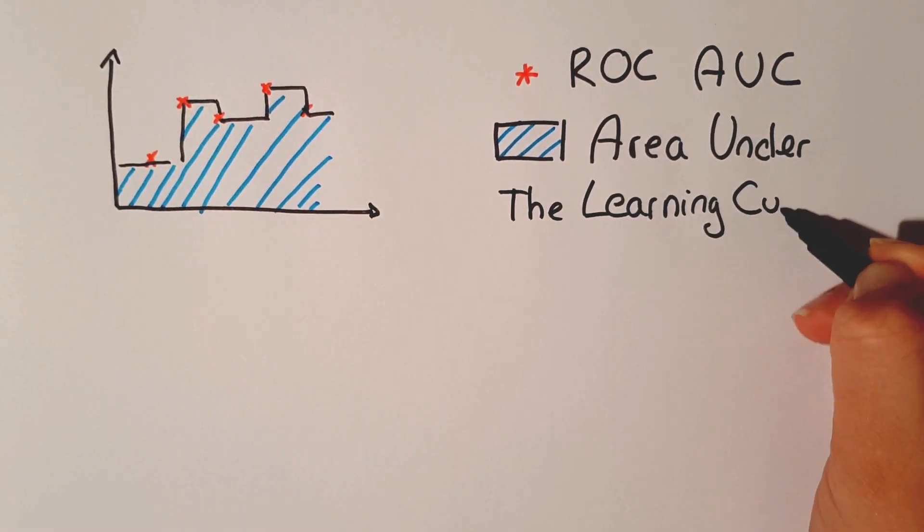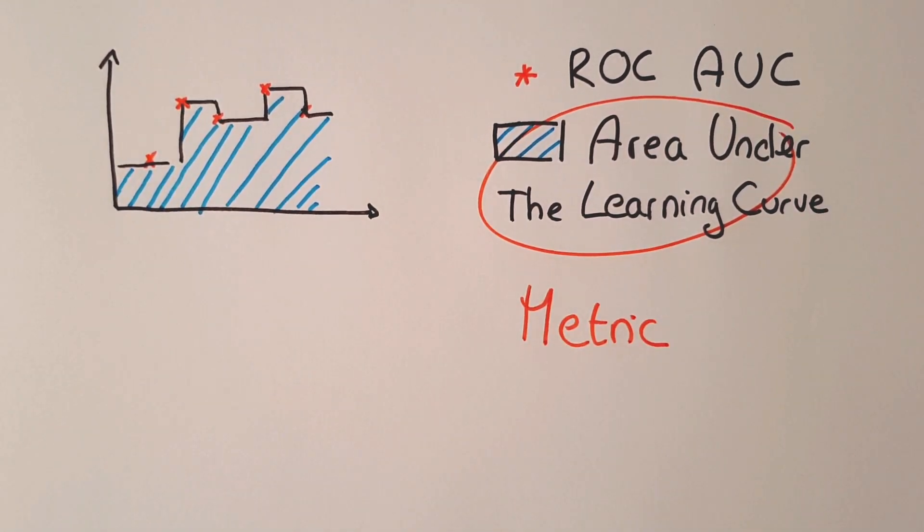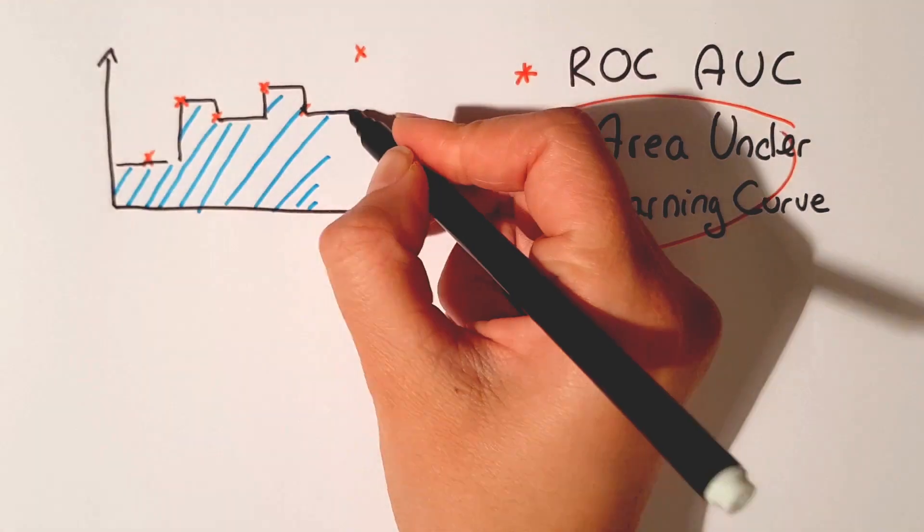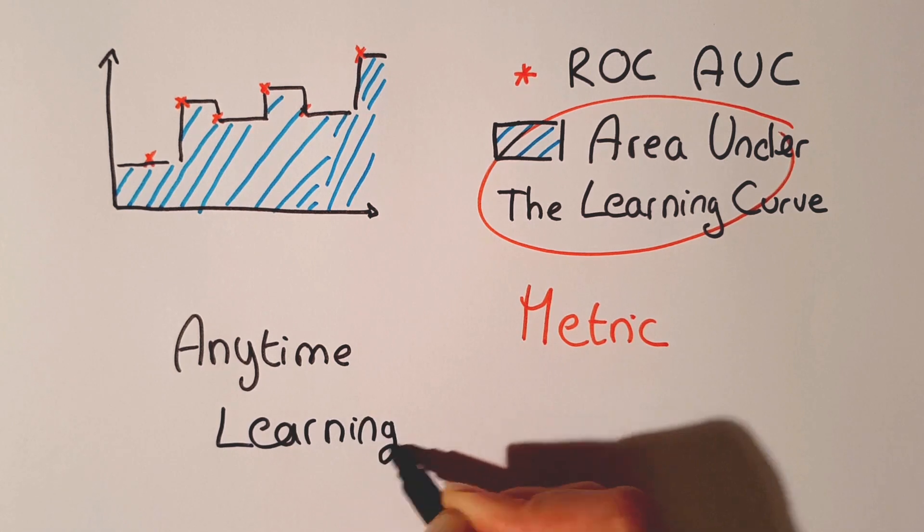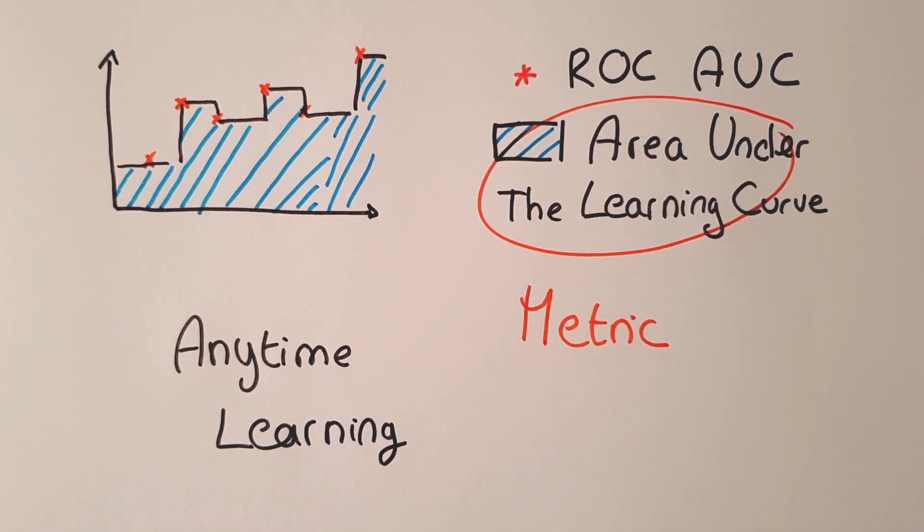Each point on the learning curve is the average ROC AUC over all labels. We let you manage your time budget and decide when to save your predictions and make a new point on the learning curve. We call this setting anytime learning because to win, an algorithm should be doing as well as possible at any time during training.